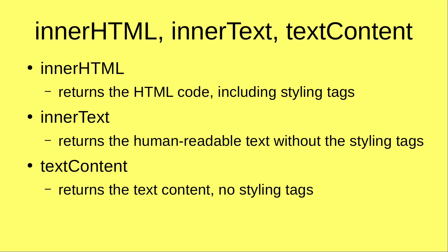For example, when we talk about the innerHTML, it will help us return the HTML code including the style text. And for the innerText property, we will return the human readable text without any styling text. And for the textContent property, it can help us return the text content with no styling text.